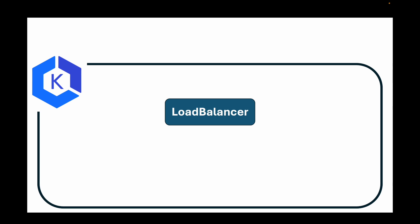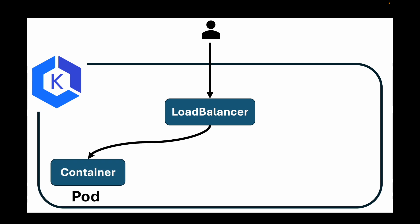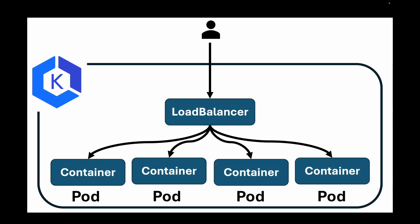The last service type is LoadBalancer. LoadBalancer is well integrated with cloud environments. On AWS it creates an Elastic Load Balancer to proxy your incoming traffic to the relevant workload. With the LoadBalancer service type we are exposing the pods to the outside internet. As a user you hit the load balancer and it forwards the traffic to the respective pods.